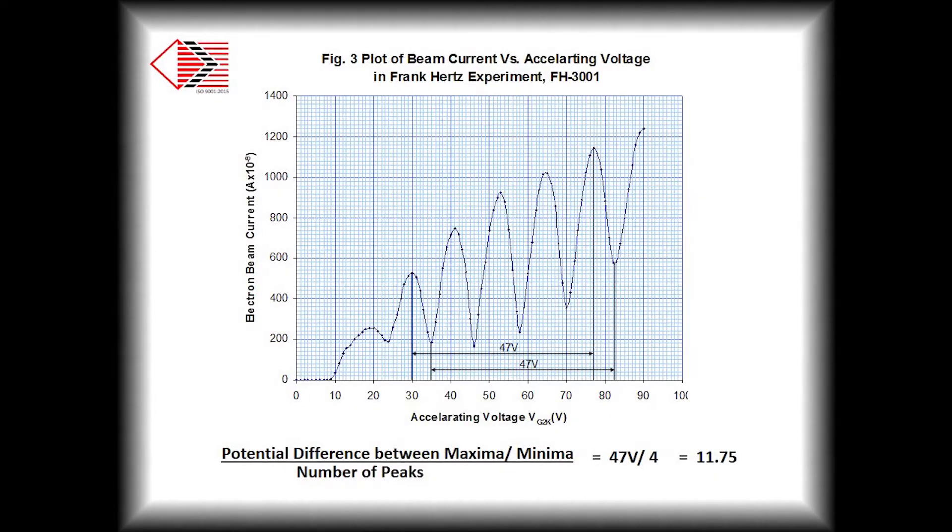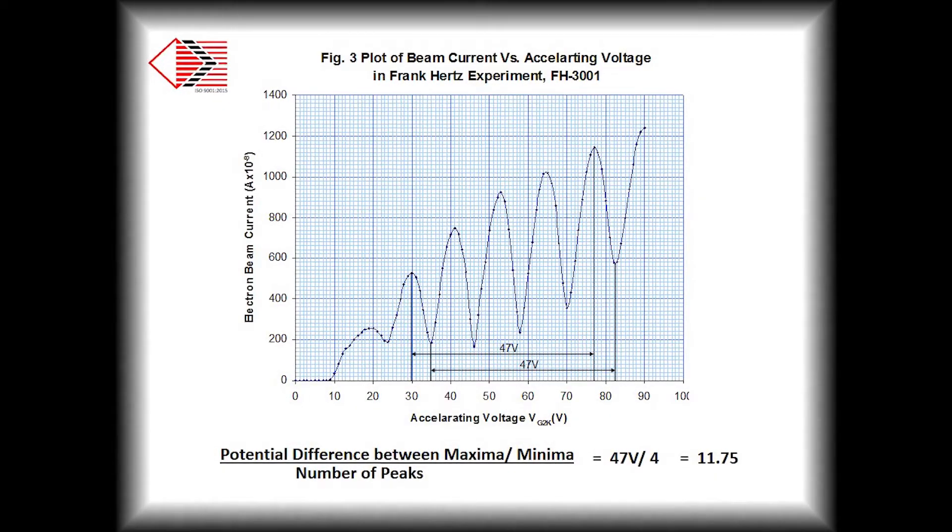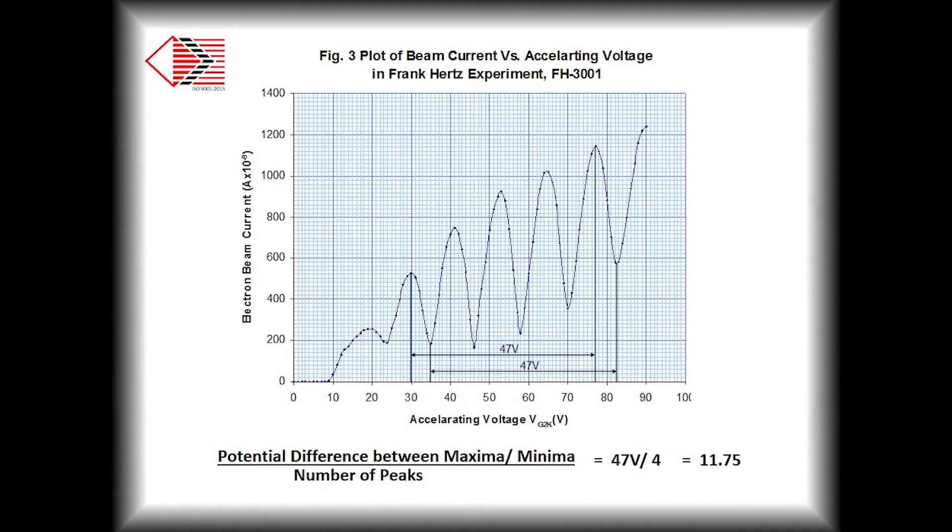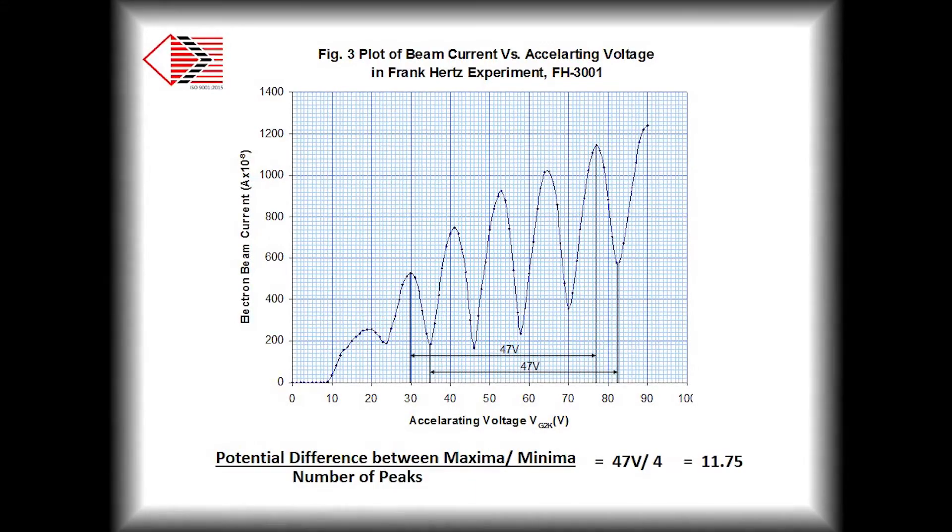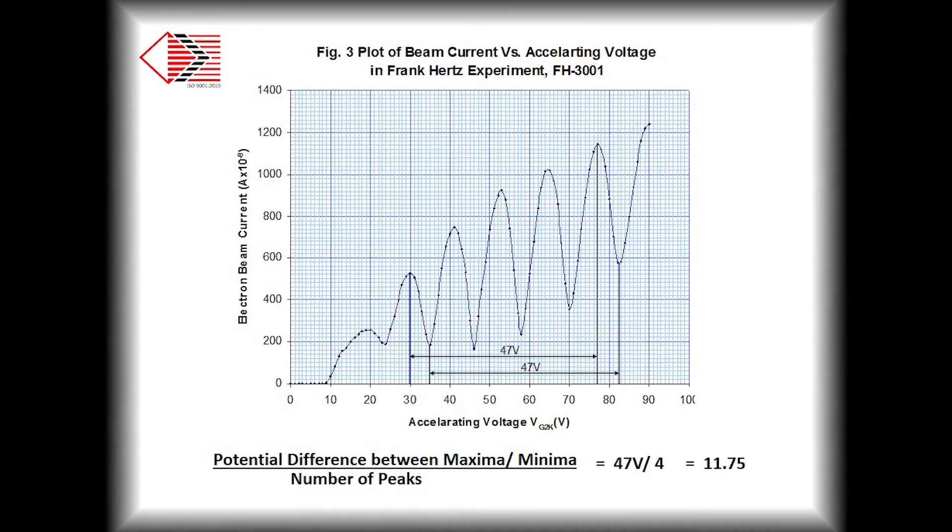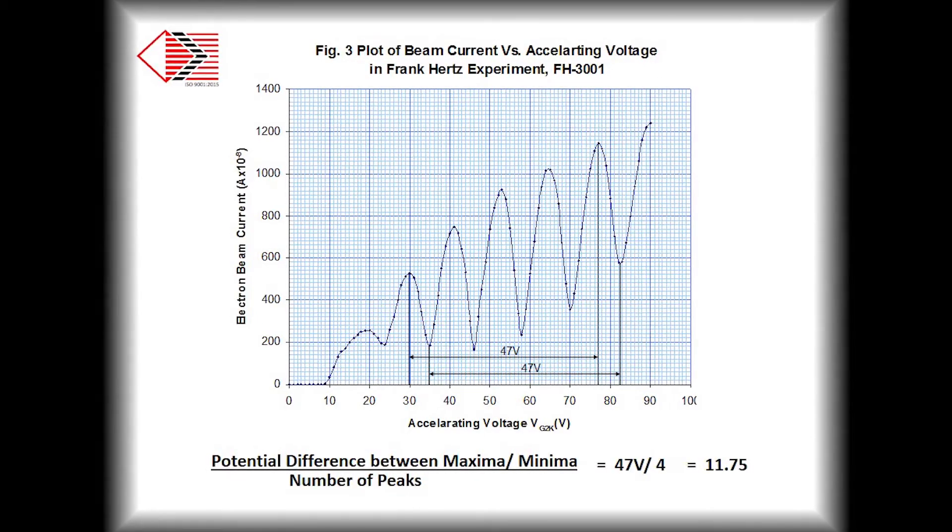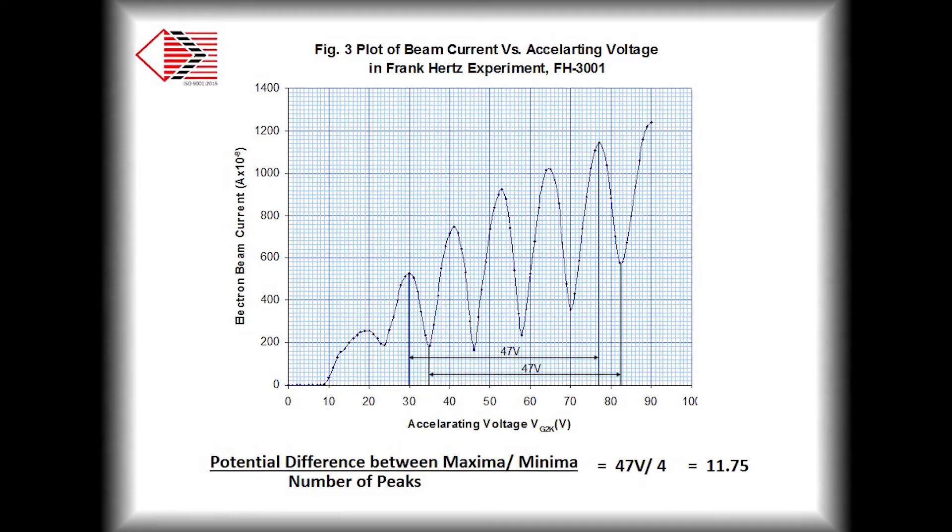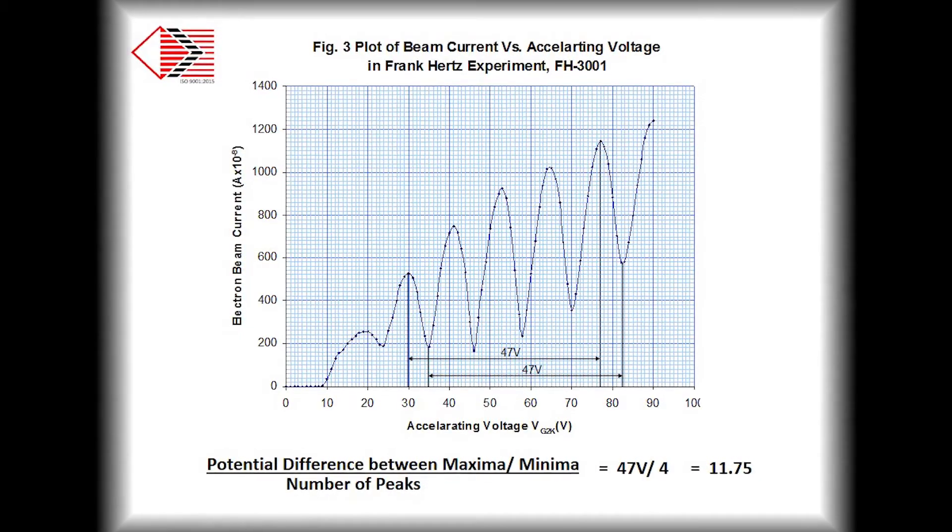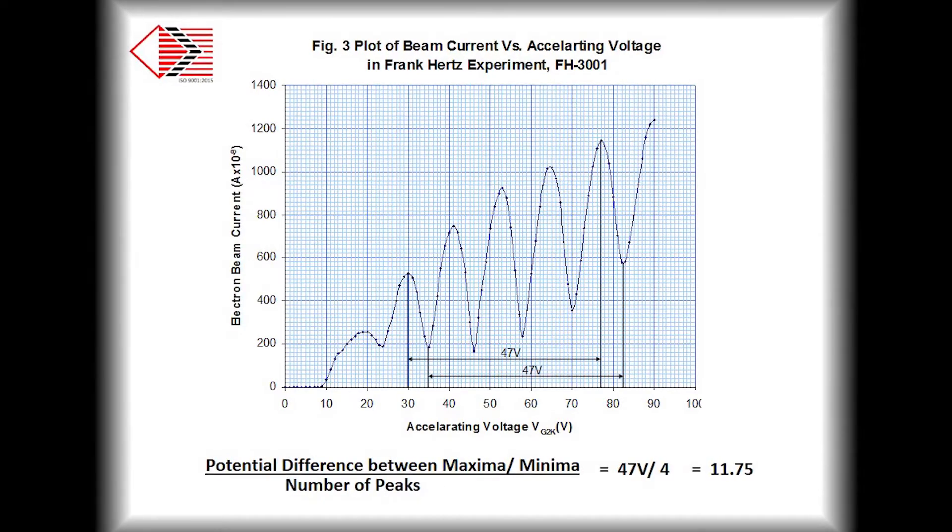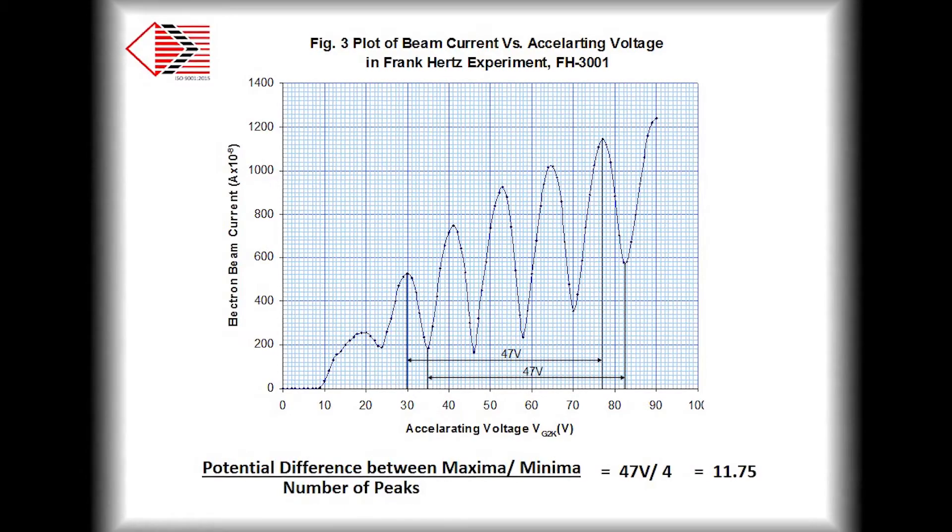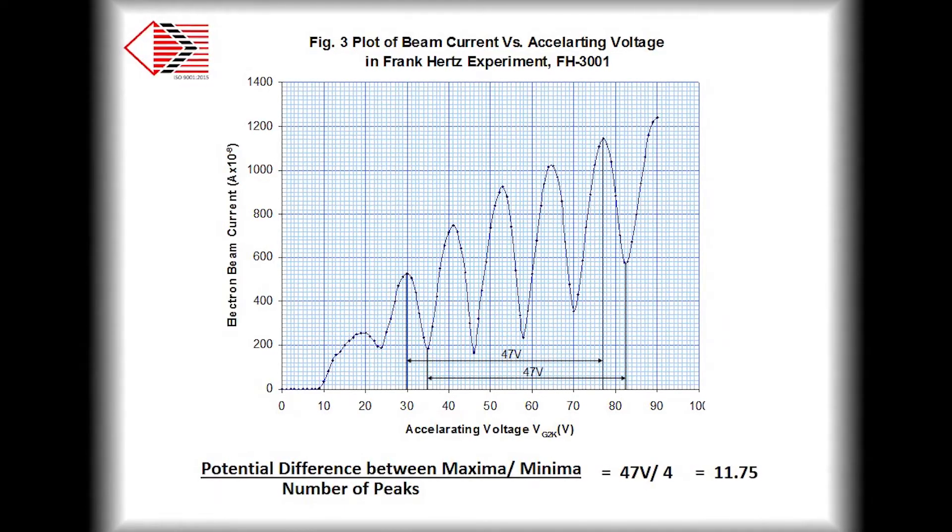As you can see, the potential difference between each peak, maxima and minima, is nearly same, demonstrating that energy is transferred in specific quanta only. To accommodate experimental errors, we will average out this potential difference by calculating the potential difference between all maxima or minima and dividing by number of peaks. This potential difference should be nearly 11.83 electron volt, which is a standard value of argon.